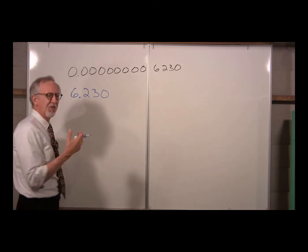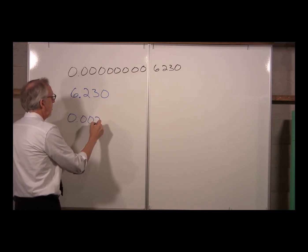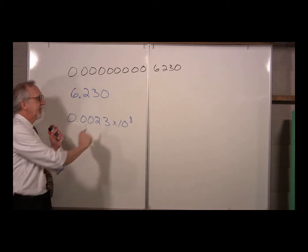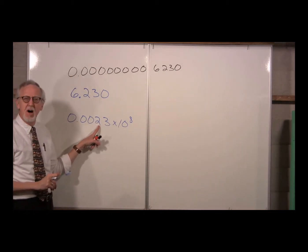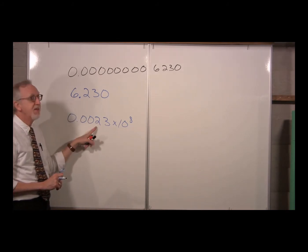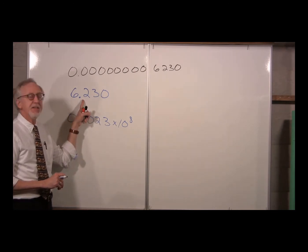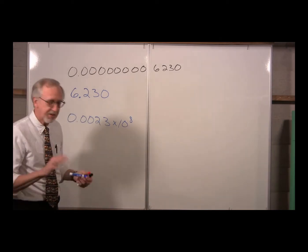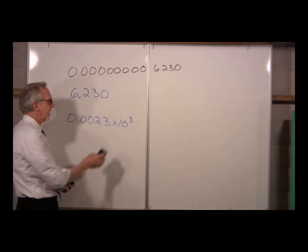If a number is in scientific notation, all you have to do is count up the digits - whatever the number of digits, that's the number of significant figures, so that would be 4. If you have a number written like 0.0023 times 10 to the 8th, that might look like scientific notation but it's not, because you've got to have a non-zero digit to the left of the decimal point. So you can't just count up all the digits in that case.